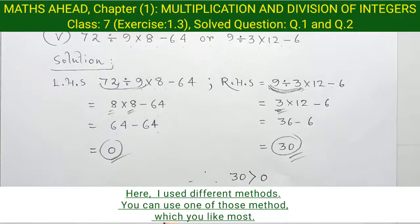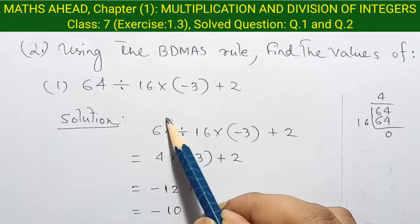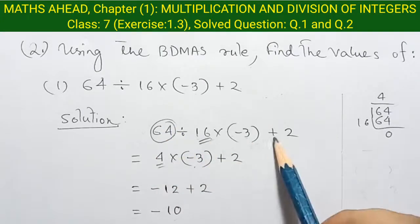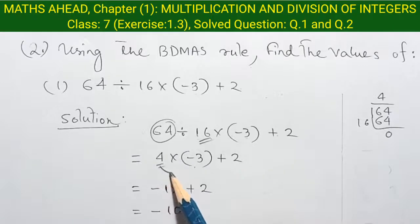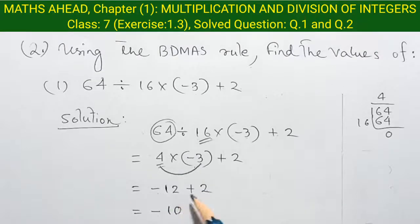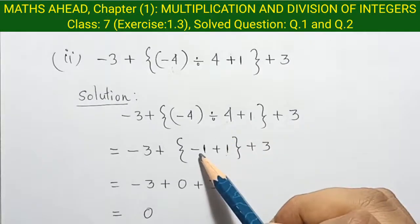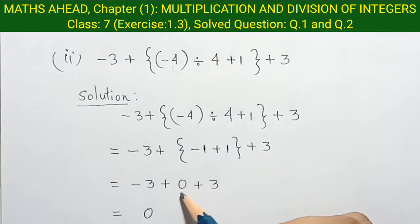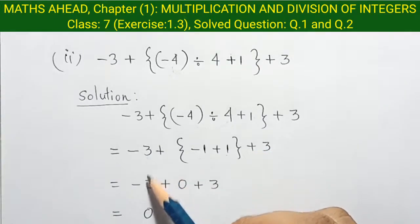So 9 divided by 3 into 12 minus 6 is greater than 72 divided by 9 into 8 minus 64. Solution: at first we divide 64 by 16, so the value is 4. Now minus 3 plus 2: so 4 into 3 equal to 12, and plus and minus became minus plus 2, so 12 minus 2 equal to minus 10. This is our answer. Then 4 divided by 4 equal to minus 1 plus 1 bracket 3, so minus 1 plus 1 became 0. So minus 3 plus 3 became 0, finally answer is 0.